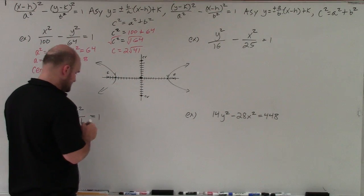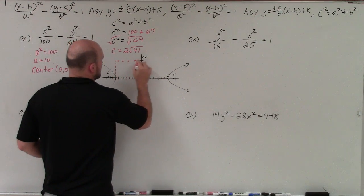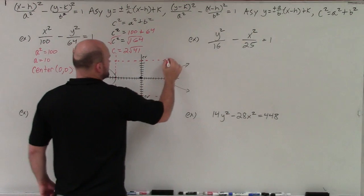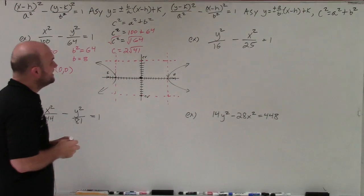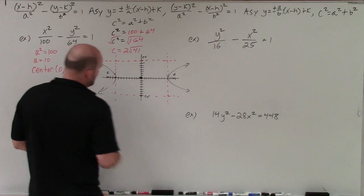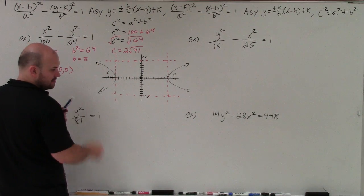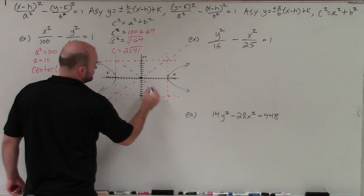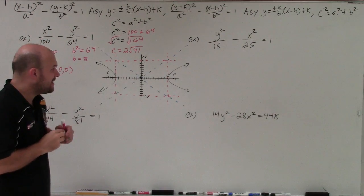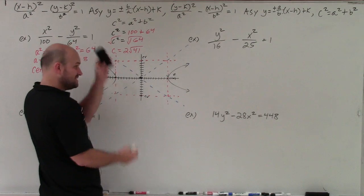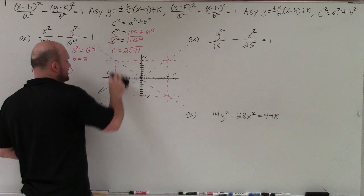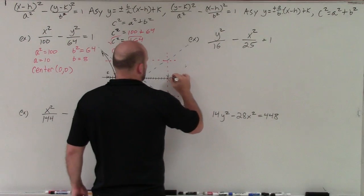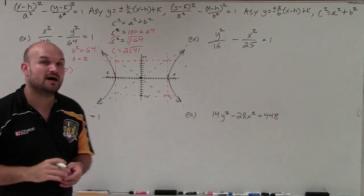What's nice about knowing the co-vertices and vertices is we can create a box by drawing horizontal and vertical lines through them. Using vertical and horizontal lines through your vertices and co-vertices creates a box — and your asymptotes go through the center and cut across the corners of this box. When graphing, the hyperbola opens toward the foci and approaches those asymptotes, giving you a clear picture of what the graph looks like.